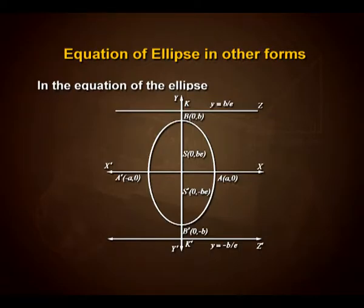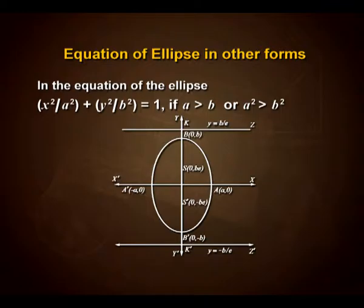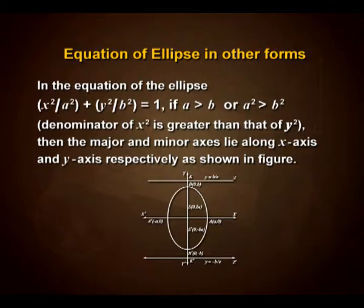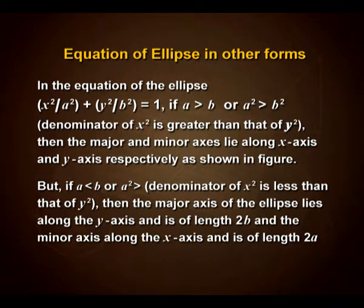Now let us look into the equation of ellipse in other forms. In the equation x²/a² + y²/b² = 1, if a > b, then the major and minor axes lie along the x-axis and y-axis respectively. But if a < b, the major axis of the ellipse lies along the y-axis and is of length 2b, and the minor axis along the x-axis and is of length 2a.